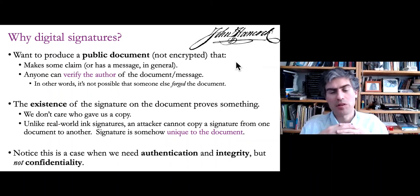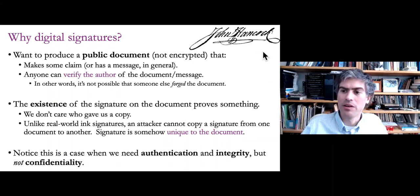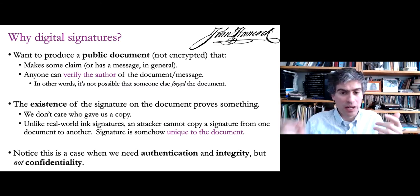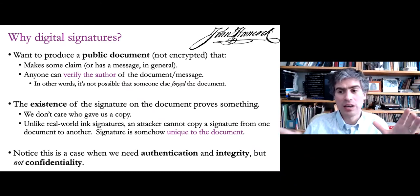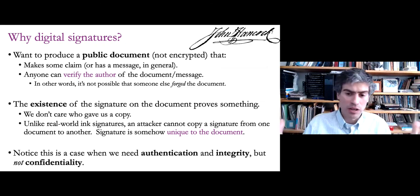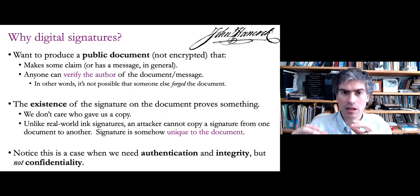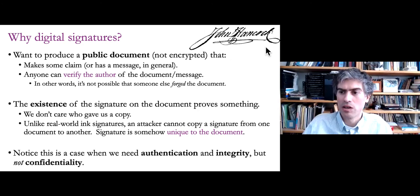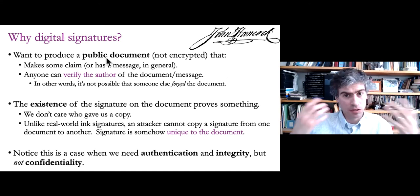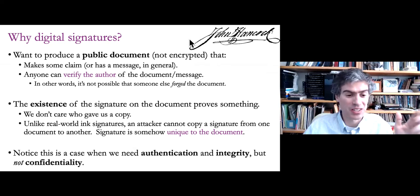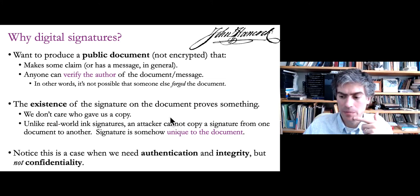In the real world, especially in the old days, we had ink signatures — like John Hancock's — which were supposed to certify a document. If you write a letter or contract and your signature appears in ink, the person looking at it would check the signature against ones they've seen before, knowing it would be difficult to replicate. It's not a perfect system — you can forge a signature if you're careful. The same basic idea is used for digital signatures, but with stronger cryptographic guarantees based on algorithms and the difficulty of solving certain mathematical problems.